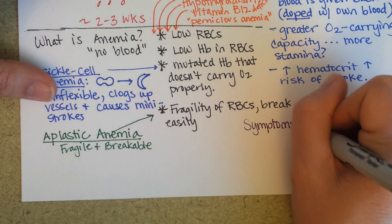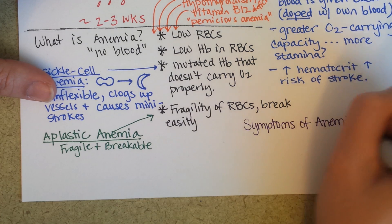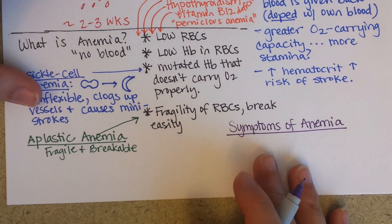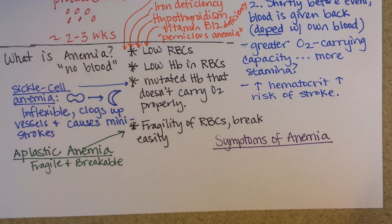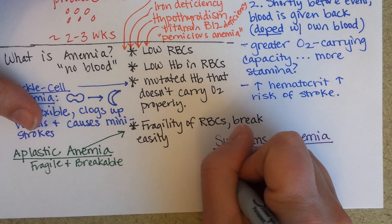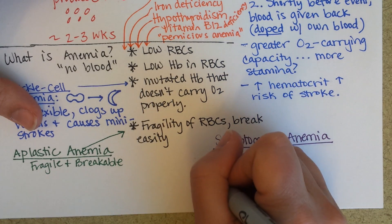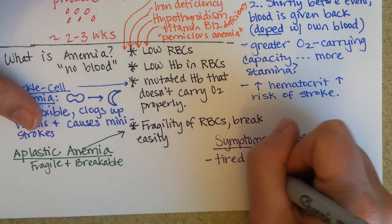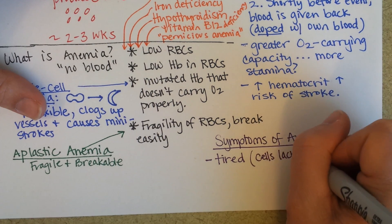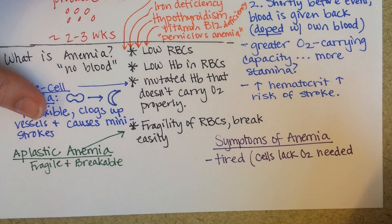The symptoms of anemia all make sense when you consider that red blood cells carry oxygen to tissues. If you don't have enough red blood cells, or not enough oxygen is getting to tissues, the person might feel tired — because their cells lack the oxygen needed to make abundant amounts of ATP.